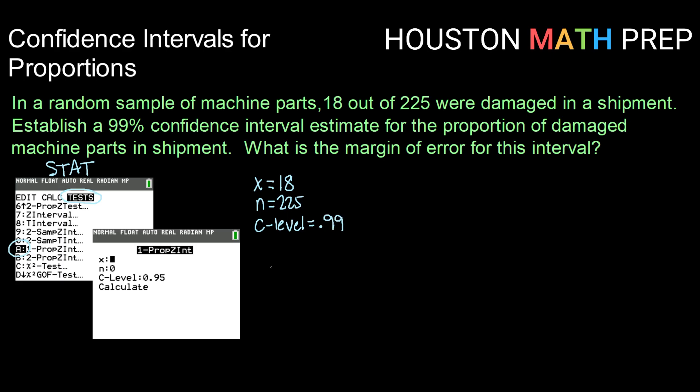Using this one proportion Z interval function, we get an interval of 0.03341 to 0.12659. There's our confidence intervals. We've established that. But the question that we're really being asked is, what is the margin of error for this interval?